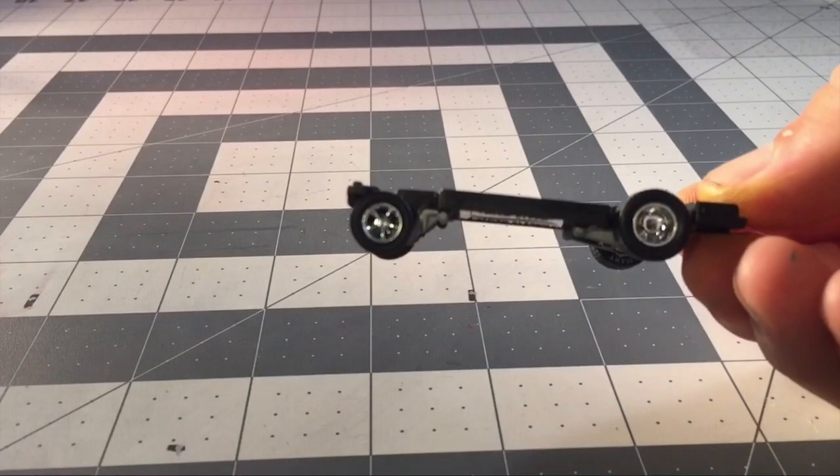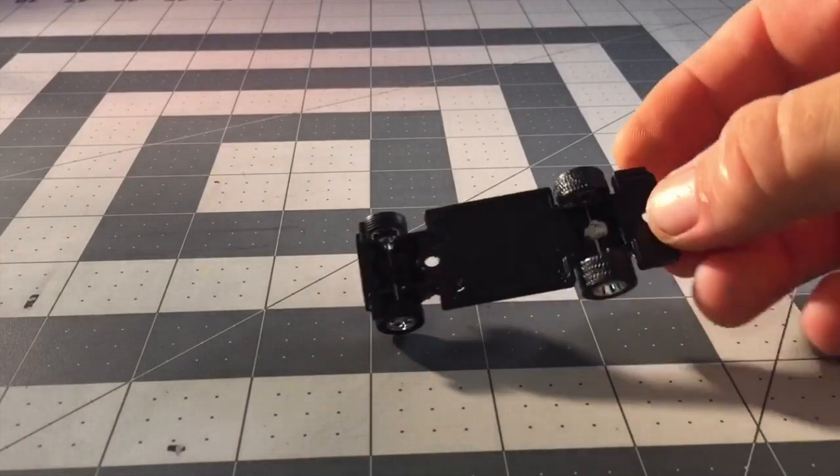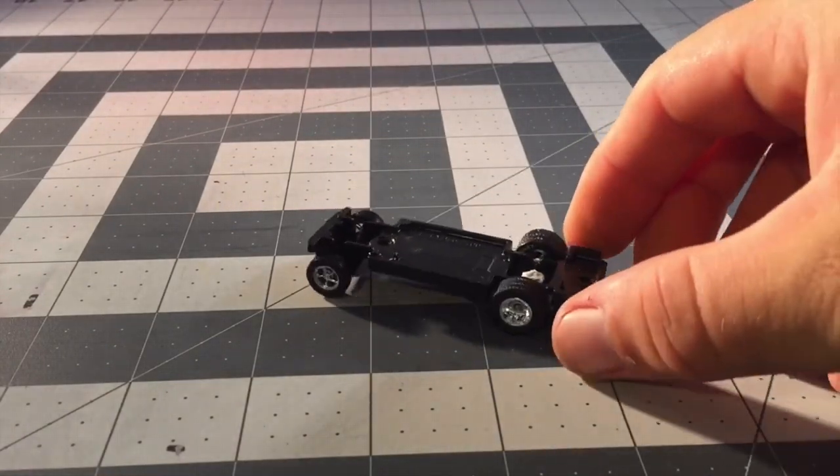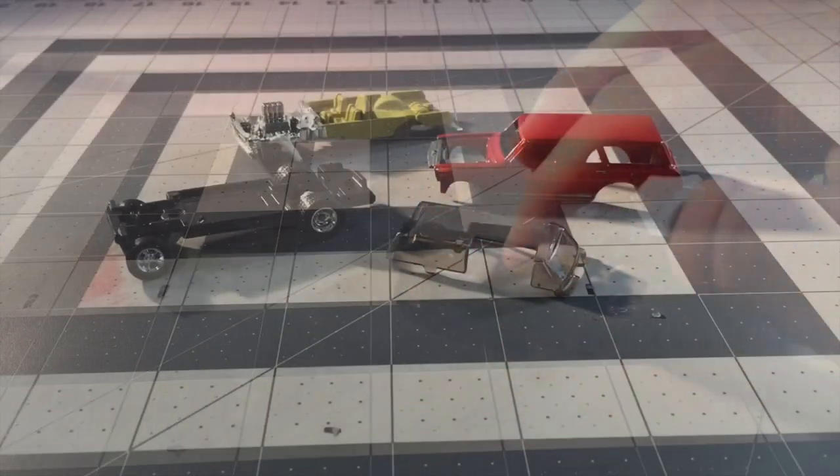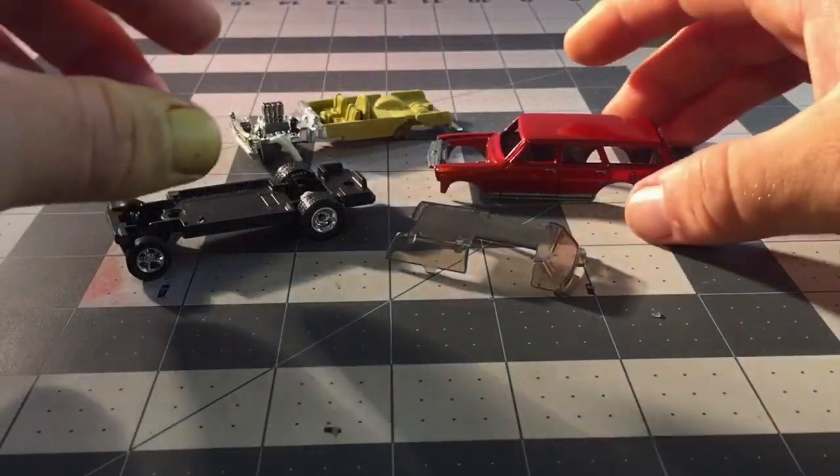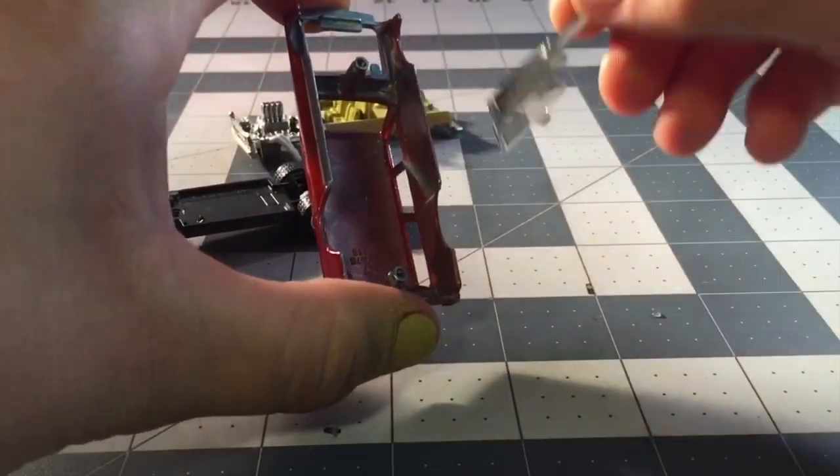I found me some sweet torque thrust twos on here I put on for the front. I have no idea where they came from, they're probably M2 or something. Here we go, we got all the pieces, we got the body, the base, the interior, the glass.